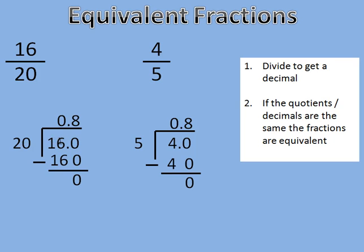20 goes into 160 8 times, but it has to be on the right-hand side of my decimal because to make 160, I have to put my decimal in there before I put that 0 there. So 8 times 20 is 160. 160 minus 160 equals 0.